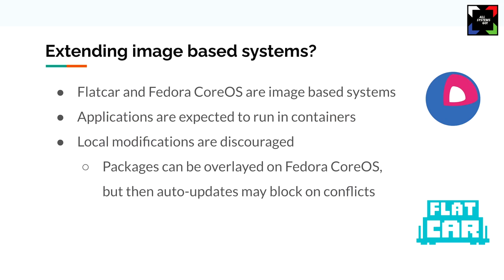Let's quickly set the context for this talk. We're going to talk about Systemd and Systemd SysX applied to immutable operating systems. Flatcar and Fedora CoreOS are container OSes designed to run container workloads — single containers or bigger workloads like Kubernetes nodes. Most of the time, we recommend users run applications inside containers, but there are edge cases where that's not possible.